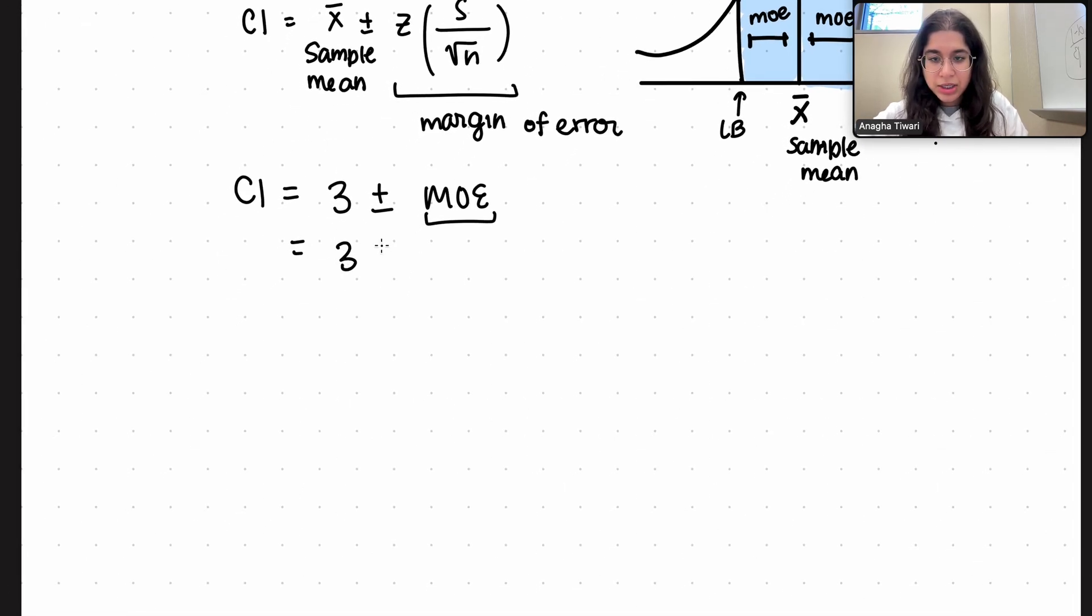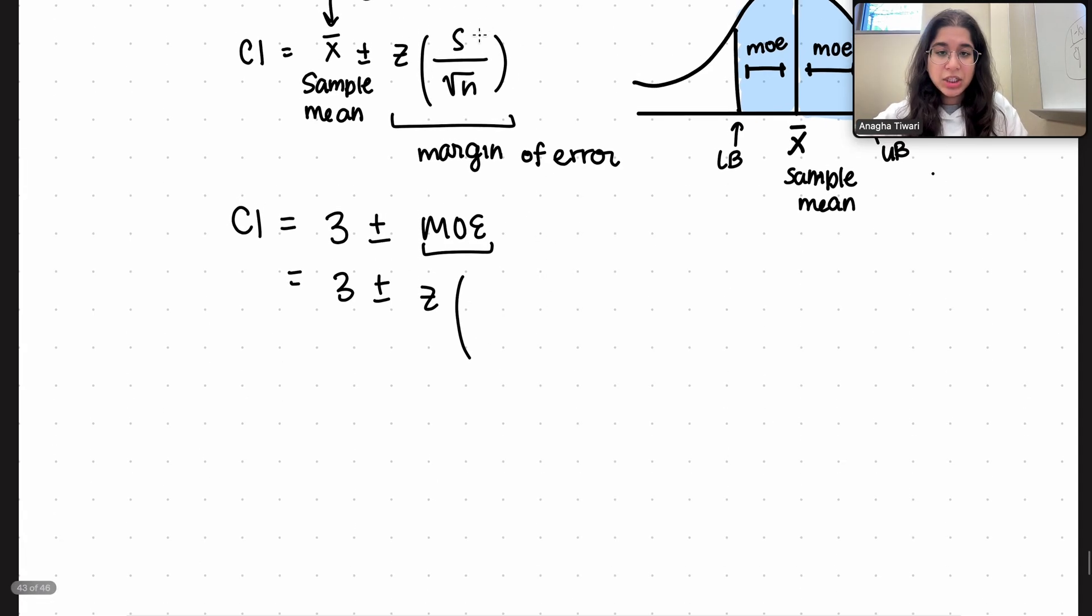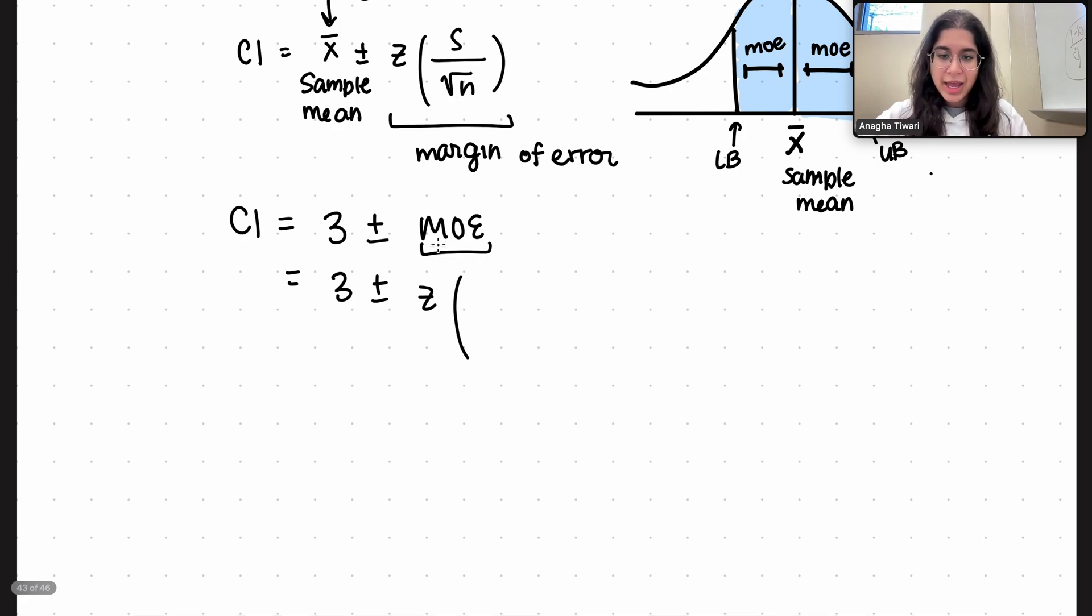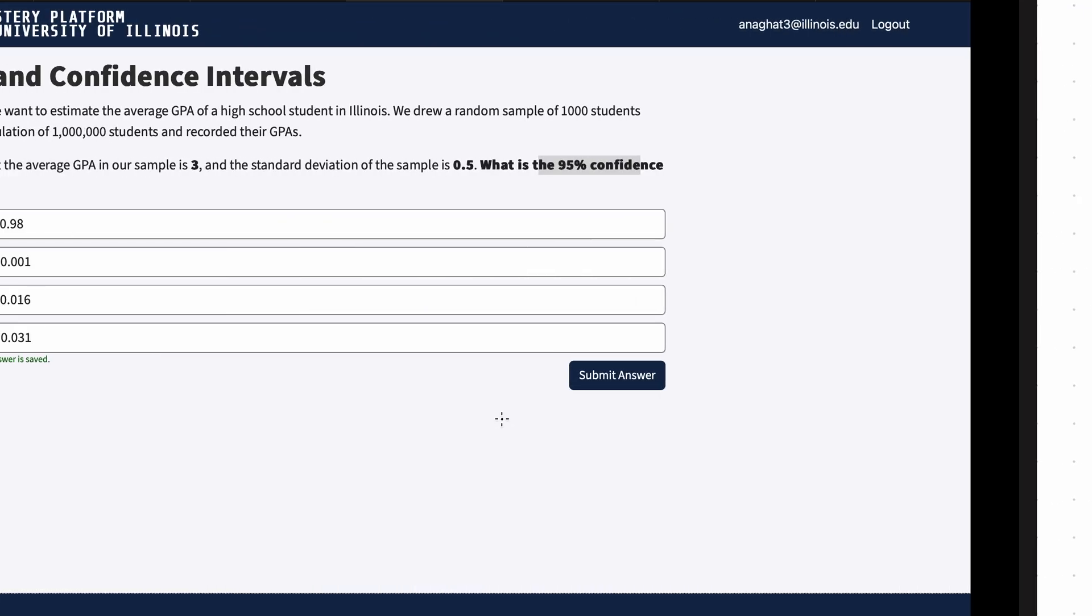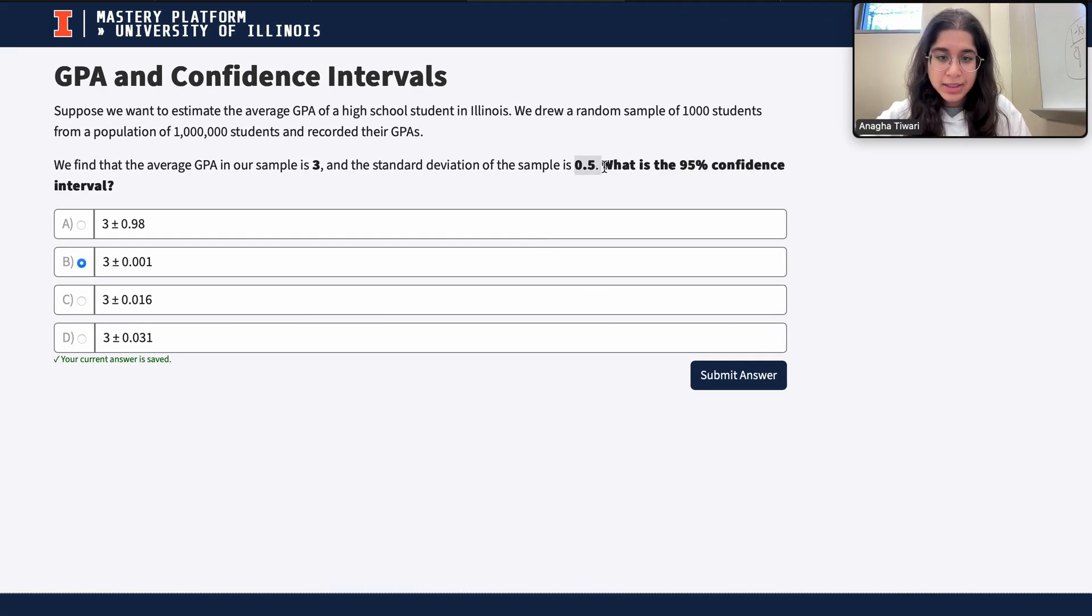It's going to be 3 plus or minus what is our margin of error. Well that's going to be z times the sample standard deviation divided by square root of n. As you can see we have the sample standard deviation and our n already given to us. This is a pretty simple problem. The sample standard deviation is 0.5.